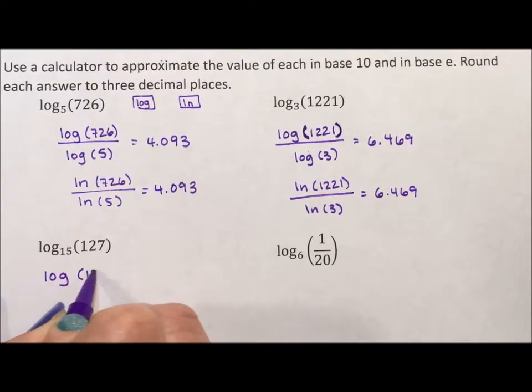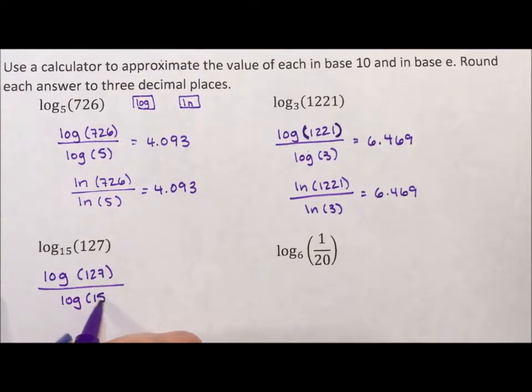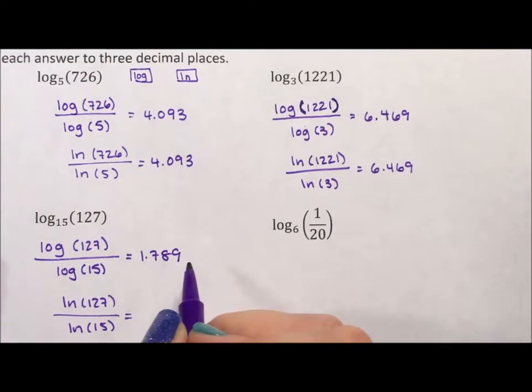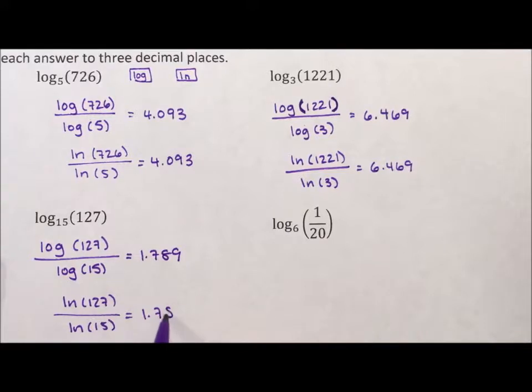So log of 127 close parenthesis divided by log of 15, and we'll get 1.789. But if I do natural log of 127 divided by natural log of 15, I'll also get 1.789. It's actually 1.788 but you know it rounds.